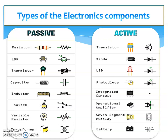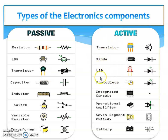There is a distinct difference between these two types. Passive components include resistor, LDR, thermistor, capacitor, inductor, switch, variable resistors, and transformers — components you have used in your laboratories. Active components include transistors, diodes, LEDs, photodiodes, ICs, operational amplifier ICs, seven-segment displays, and batteries. These are called active components.